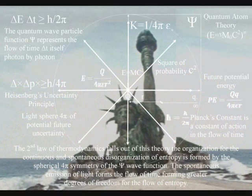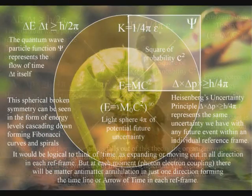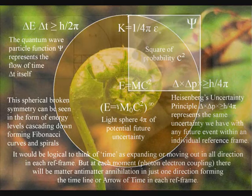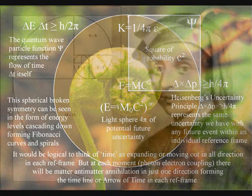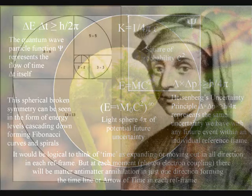This broken symmetry can be seen in the physical world as spiral symmetry in the form of the Fibonacci spiral being visible almost everywhere in nature.